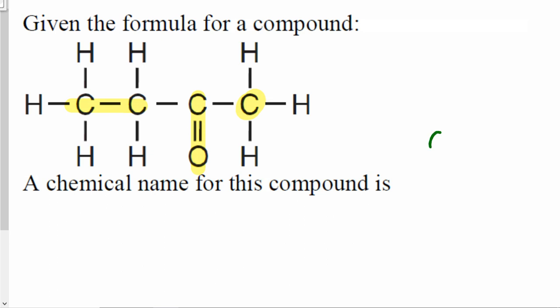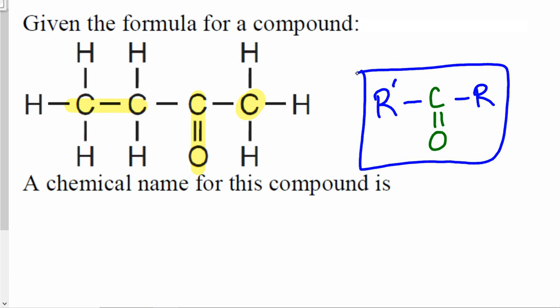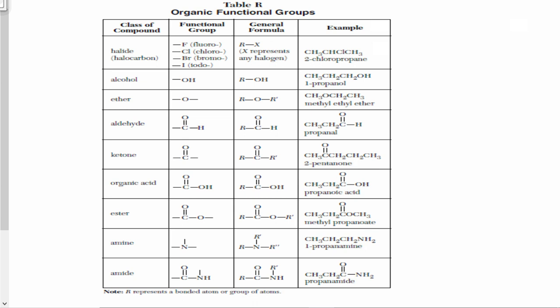I would draw it like this: I have oxygen double bonded with a carbon. On the right side of this carbon I have a carbon group (R), and on the left side I have another carbon group (R'). Then I have to find this general formula using reference table R. Looking at reference table R, the general formula matches the formula of a ketone.